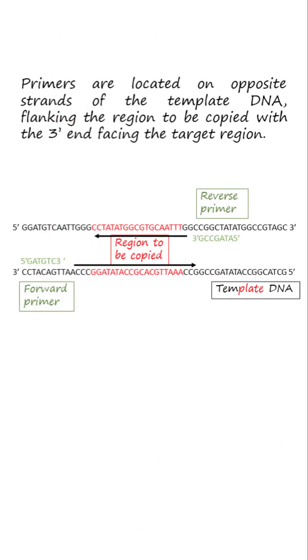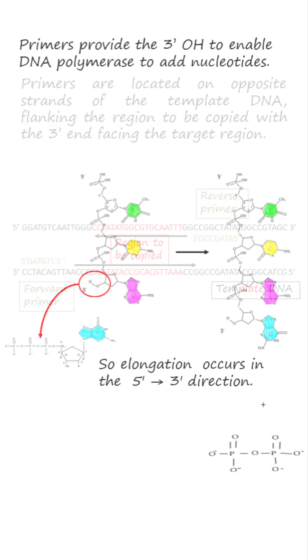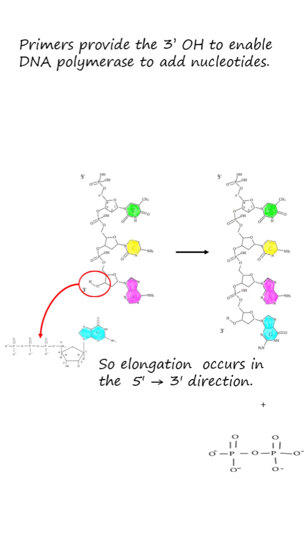Primers are located on opposite strands of the template DNA, flanking the region to be copied with a 3' end facing the target region. Primers provide the 3' hydroxyl to enable DNA polymerase to add nucleotides.